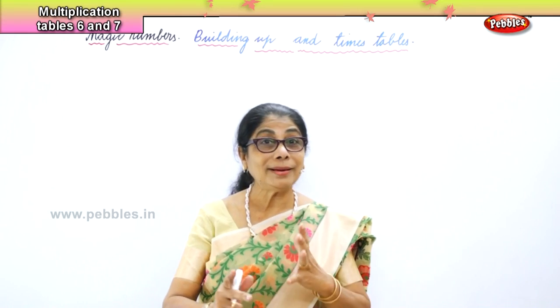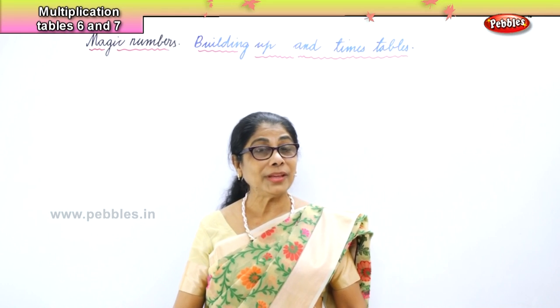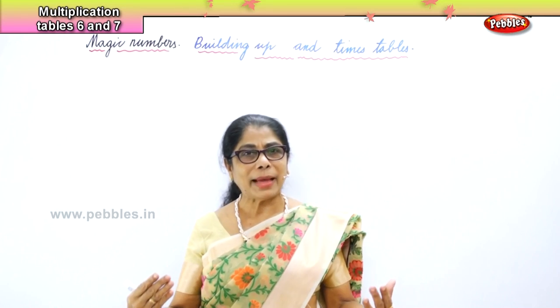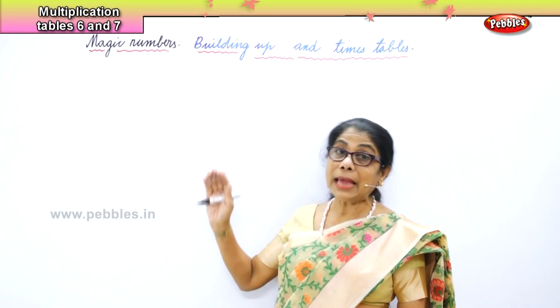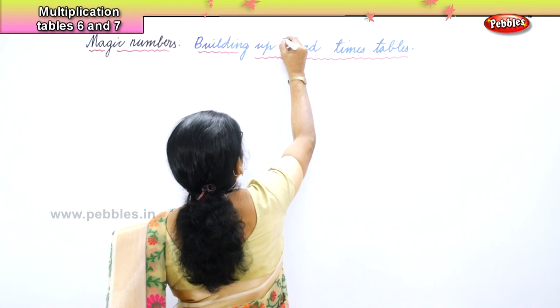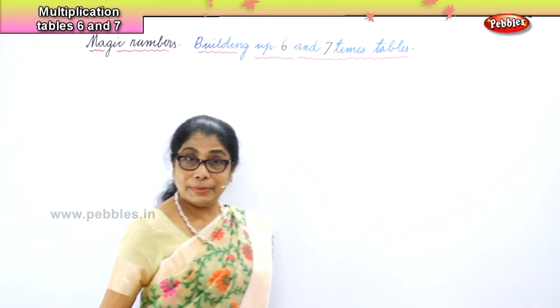Hi children, we learned the magic numbers building of 3 and 4 times tables. Now, let's work on the magic numbers and build our 6 and 7 times tables.